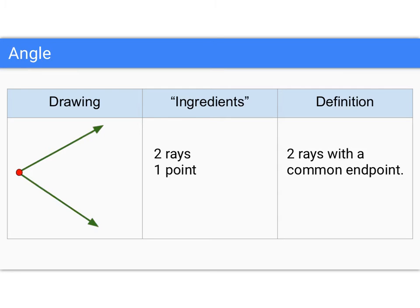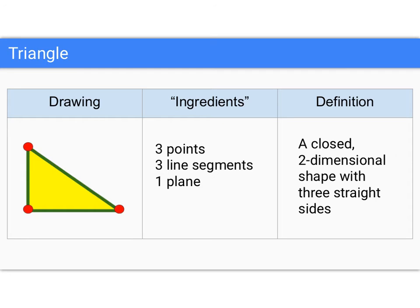Now we know how to build angles, we know how to build rays, we know how to build line segments. We can use those things to build shapes. So here's a triangle. What do we need for a triangle? Well, we need three points, we need three line segments, and we need one plane, one flat surface to be inside of those.